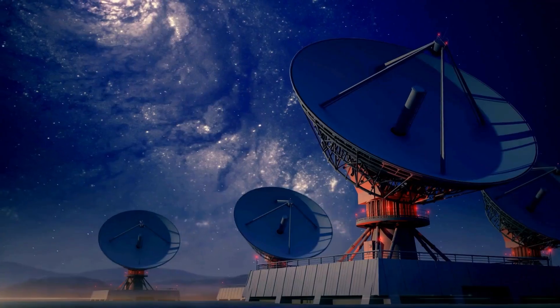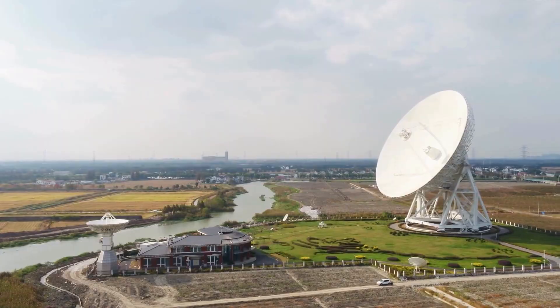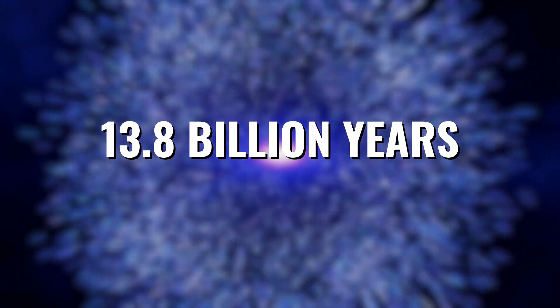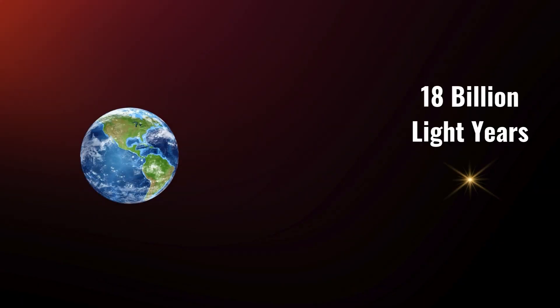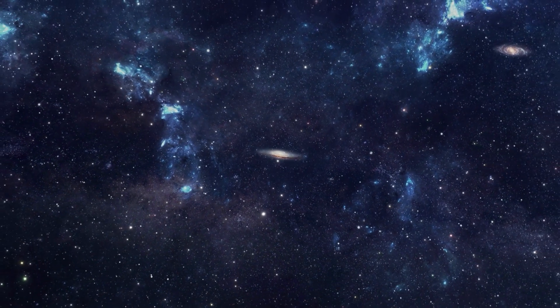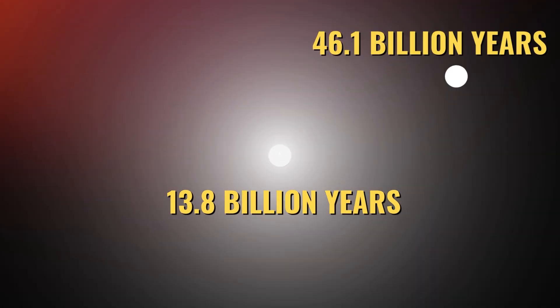Thanks to precise measurements, we know the universe is 13.8 billion years old, so light would have spread for a maximum of 13.8 billion years since the Big Bang. But the farthest light we observe is not limited to this distance — it can reach up to 46.1 billion light years away. How does this happen? It all relates to the rate of expansion of the universe. If we sent a signal at the speed of light to a point 18 billion light years away, the signal would never reach there, because the universe is expanding much faster than we think.